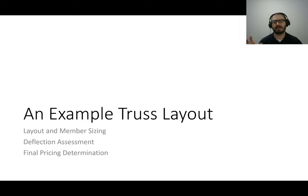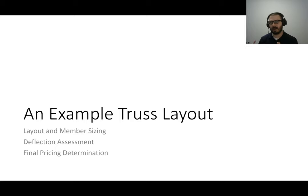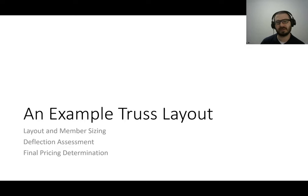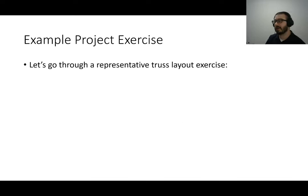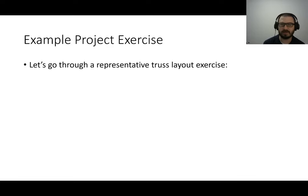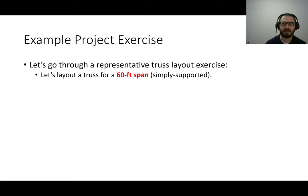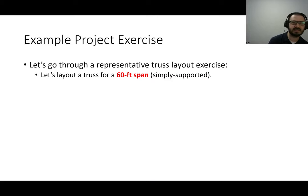With those two ideas in mind — rolled shapes and tributary area — I want to go through how you would do a truss layout: laying it out, sizing the members, computing deflections, even determining the final price. I want to go through an example project exercise. None of these parameters will match your actual project, but you can get an idea of how the math works. We're going to lay out a truss for a 60-foot span. Let's assume the bridge is 60 feet long and 24 feet wide.